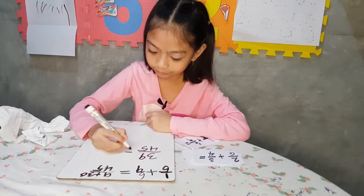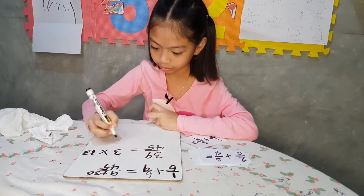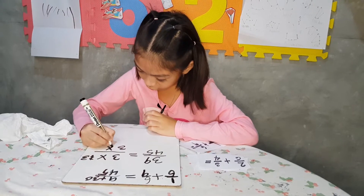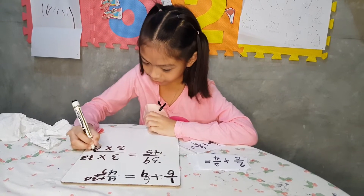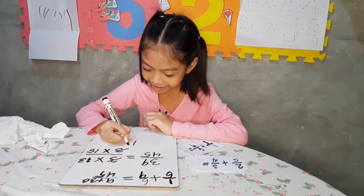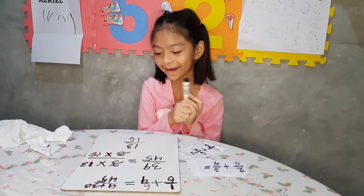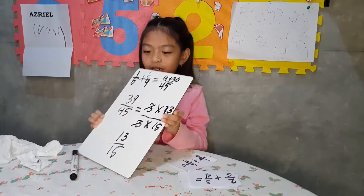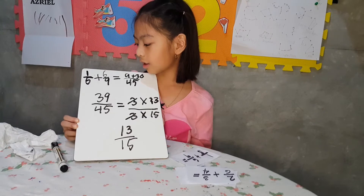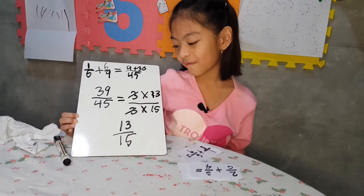9 plus 30 equals 39. Then 3 times 13 equals 39 and 3 times 15 equals 45, so cancel by 3. The answer is 13 over 15. So the answer of 1 over 5 plus 6 over 9 equals 13 over 15.